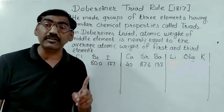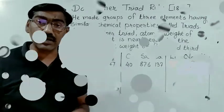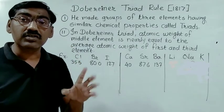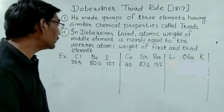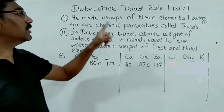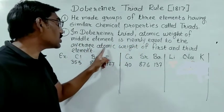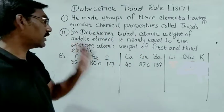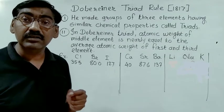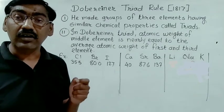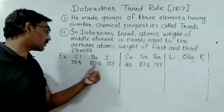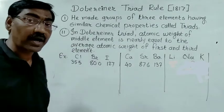These are the middle elements whose atomic weight is nearly equal to the average atomic weight of the first and third elements. The first element and third element atomic weights are averaged, and the middle element's atomic weight is nearly equal to that average.